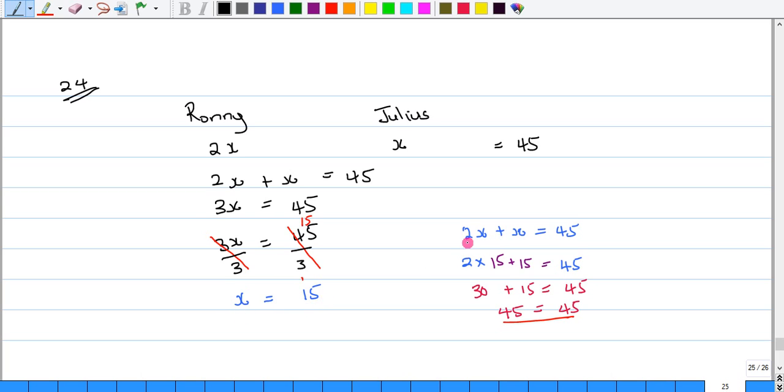Let's substitute. Remember that 2x plus x should give me 45. So 2 times what? 15 plus 15 should be equal to 45. Now, 2 times 15 will give me 30. And 30 plus 15 is equal to 45. And we have 45 on both sides.